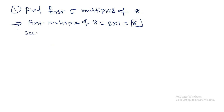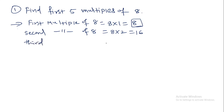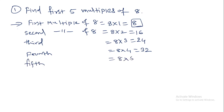Like this, you have to multiply three, four, and five to eight and you will get the respective multiples. Third: eight multiplied by three is twenty-four. Fourth: eight multiplied by four is thirty-two. And fifth: eight multiplied by five is forty. In this way we get the respective multiples when we multiply by one, two, three, four, and five.